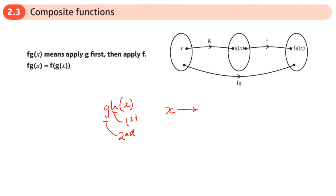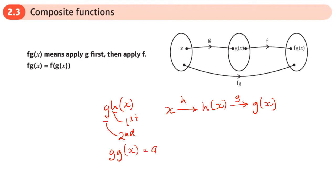You would put x into h to get h(x), and then you would put that into g to get g(x). If you have the same function twice, so if you had g(g(x)), we can write that as g²(x). So basically you start with x, put it into g, and then put it into g again.